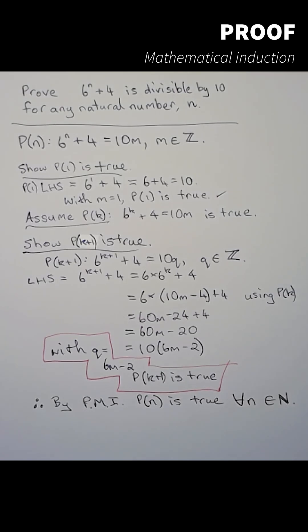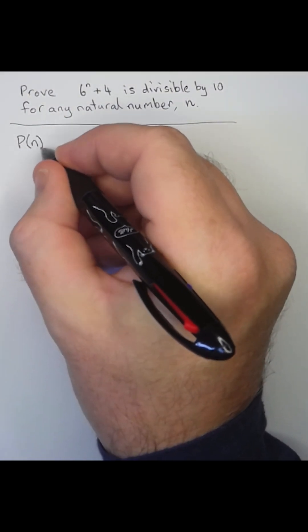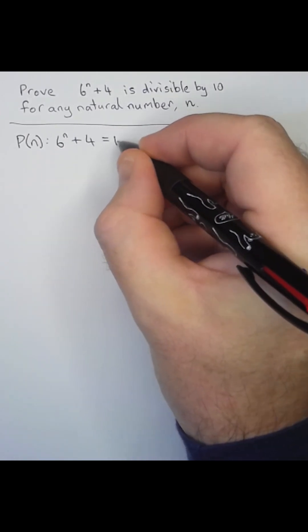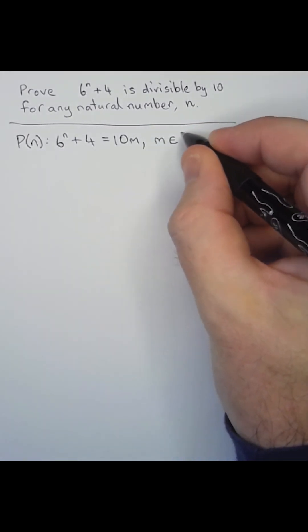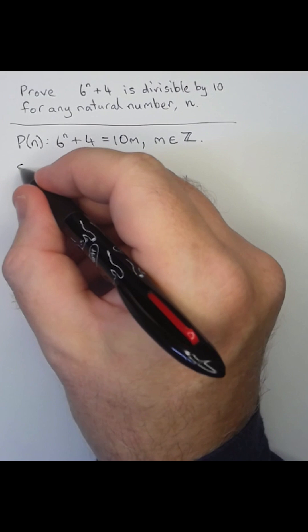Let's prove that 6 to the n plus 4 is divisible by 10 for any natural number n. First, let's write this idea mathematically. We'll say that 6 to the n plus 4 is equal to 10 times m, where m is some integer.